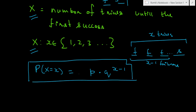There is no combination applied here because even if the failures interchange among themselves, the arrangement does not change. If 4 trials are required until the first success, the only valid combination is F, F, F, S — these cannot interchange their positions. So there is only one way of doing this and no combination is required. The PDF is simply P · Q^(x−1).